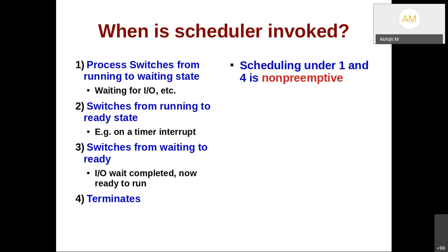If scheduling happens only under conditions 1 and 4 — the process giving up the CPU or the process getting over — that is called non-preemptive scheduling. All other scheduling, conditions 2 and 3, is called preemptive scheduling. Preemptive scheduling essentially means we have a timer interrupt (condition 2) moving the running process to the ready state when its time quantum is over. Condition 3 happens asynchronously due to an interrupt. Conditions 2 and 3 combined are nothing but interrupts. If you allow interrupts while a process code is executing, it is preemptive scheduling; if you are not allowing interrupts it is called non-preemptive scheduling.